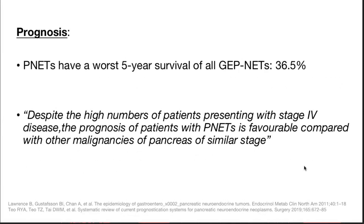Pancreatic NETs have the worst 5-year survival of all GEP-NETs at around 35%. However, despite the high number presenting with stage 4 disease, the prognosis is favorable when compared with other pancreatic malignancies of similar stage — a pancreatic NET will have a better prognosis than pancreatic adenocarcinoma at a similar stage.